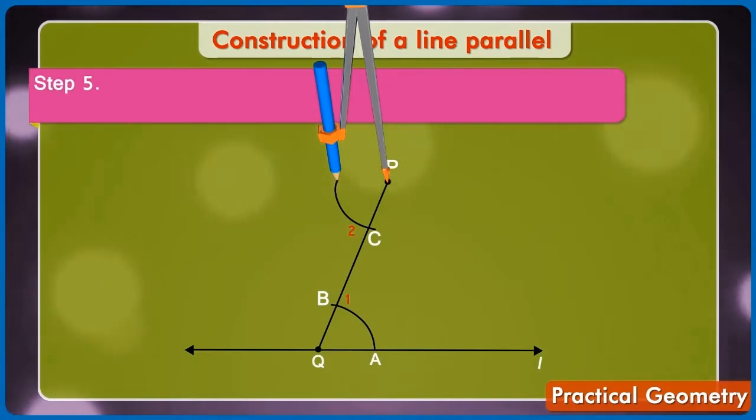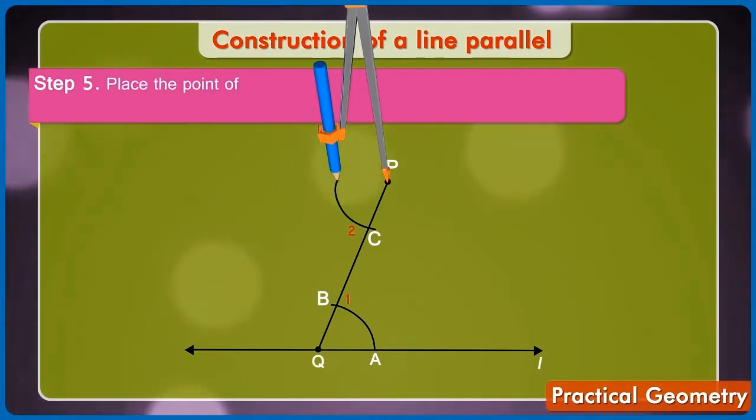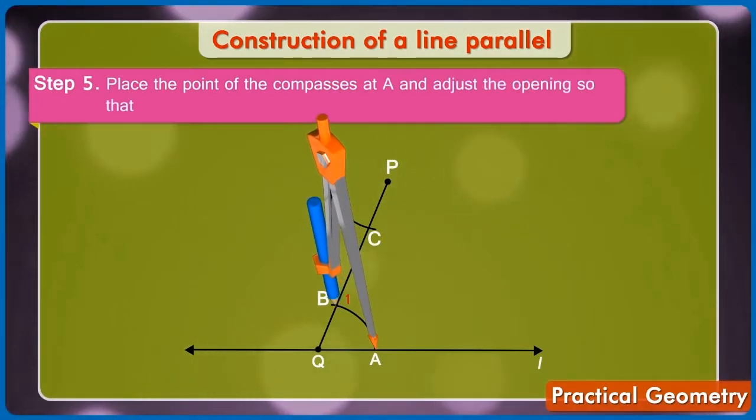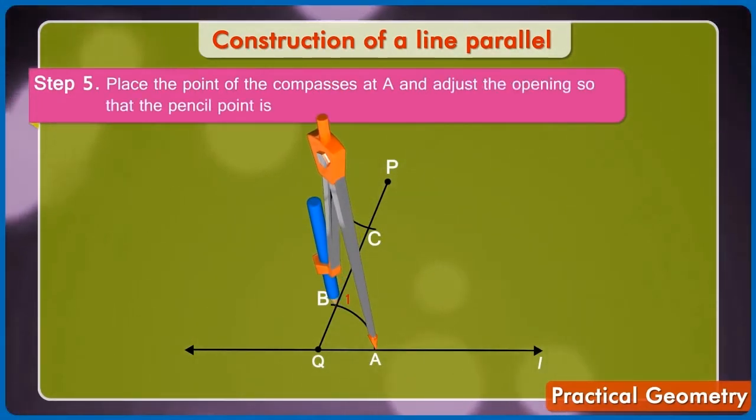Step 5: Place the point of the compass at A and adjust the opening so that the pencil point is at B.